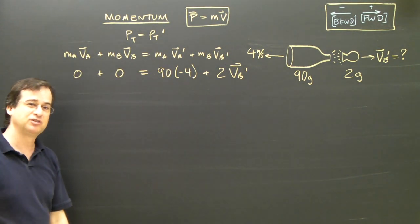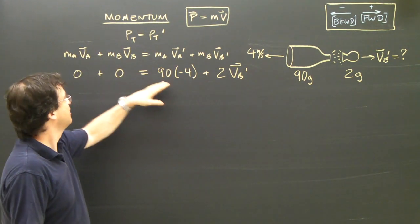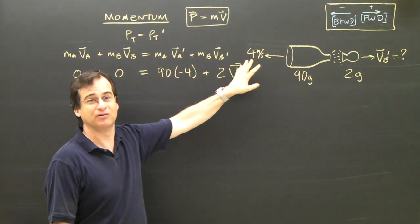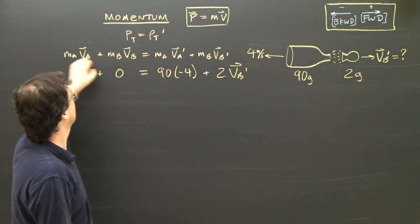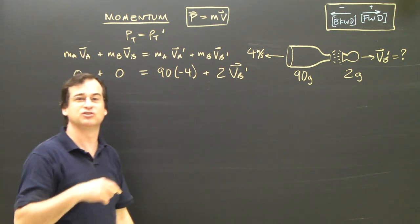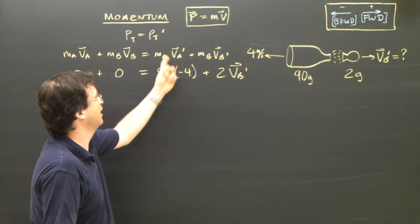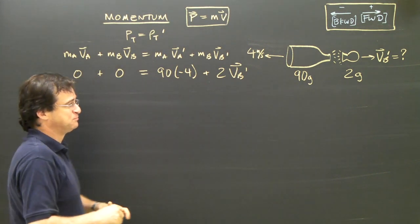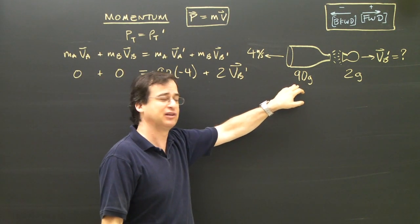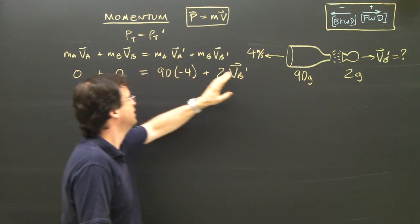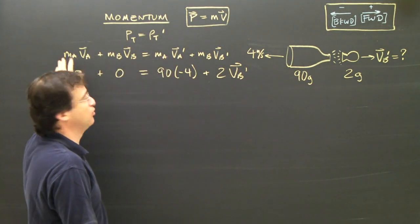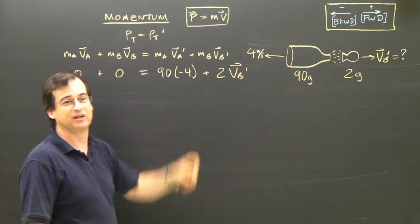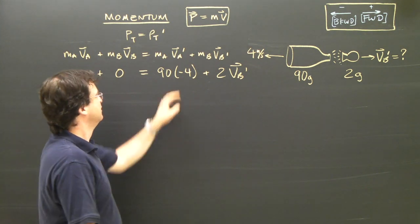This is probably a good time to mention that the units in here drop out. The units for mass are in every term. So if they're in kilograms, the units drop out, which means if they're in grams, the units drop out. As long as they're all the same units. I didn't change this to kilograms. I didn't change this to kilograms because that is in all of the terms. So I can leave them as grams, which makes it easier.